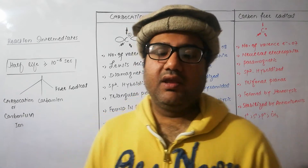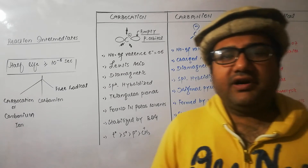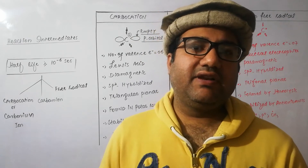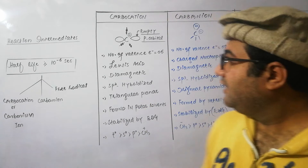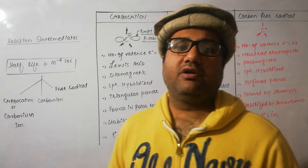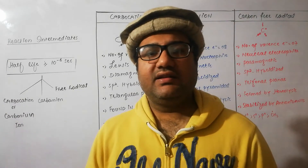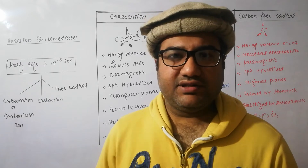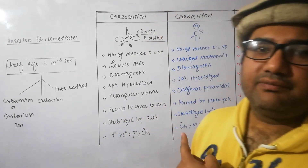Now let us discuss them one by one. A carbocation is a carbon having six electrons in its valence shell, and it also carries a positive charge. This carbocation has six valence electrons in the form of three bond pairs, while one p orbital is empty. Listen very carefully — this empty p orbital plays a vital role in racemization during organic reactions, particularly in the SN1 reaction.